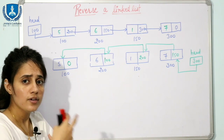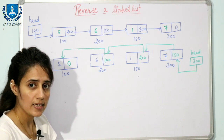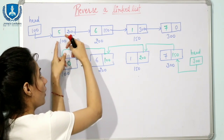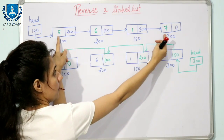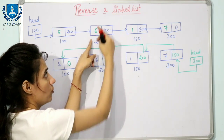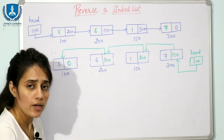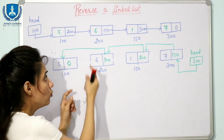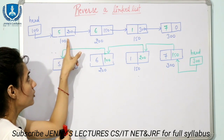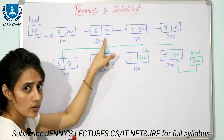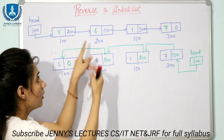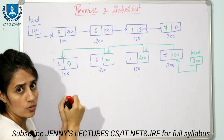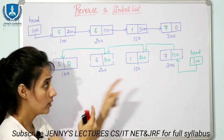After reversing this linked list, the output should look different. Reversing doesn't mean we are going to swap the data — 5 goes there and 7 comes here. Instead, we are going to reverse the links. Each node currently contains the address of the next node; after reversing, each node will contain the address of the previous node, not the next node.